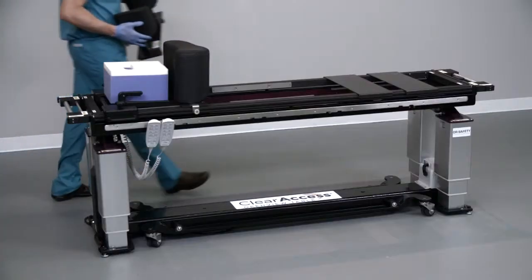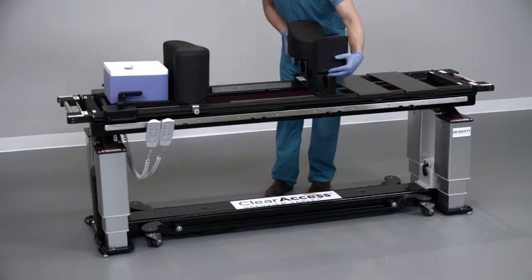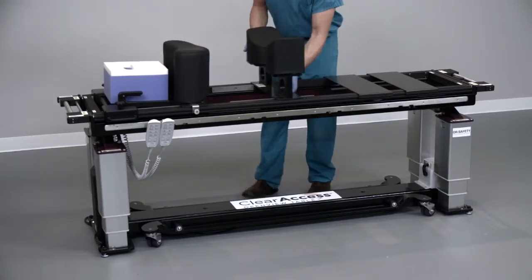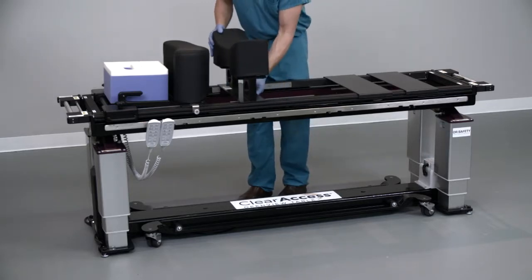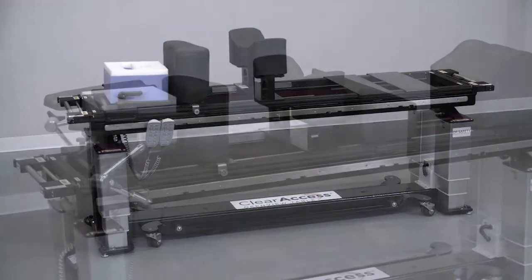Install the pelvic system of the open frame spine platform by inserting the feet toward the foot end of the table. Then slide forward to engage the inner rail. Remember to align the pads with the patient's sternum and iliac crest prior to transferring the patient onto the table.